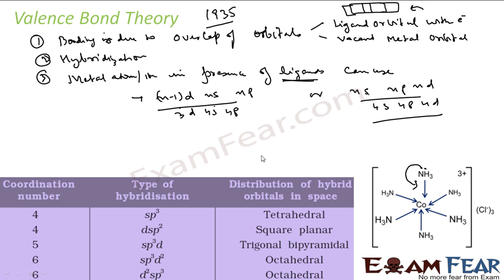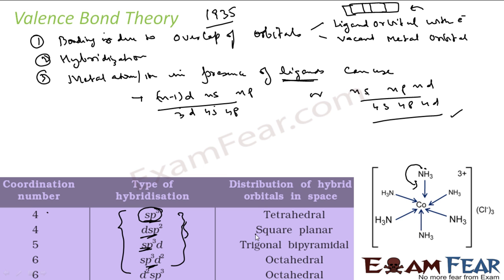The hybridized orbitals form shapes: sp³ gives tetrahedral, dsp² gives square planar, sp³d gives trigonal bipyramidal, sp³d² gives octahedral, and d²sp³ also gives octahedral. So for coordination number 4 it forms tetrahedral or square planar depending on hybridization. Coordination number 5 always gives trigonal bipyramidal. Coordination number 6 always gives octahedral, irrespective of hybridization type.